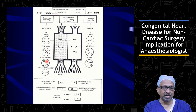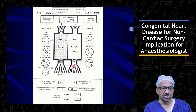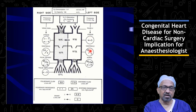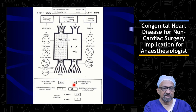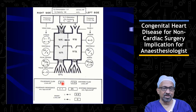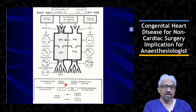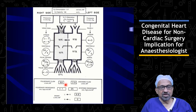Left atrial saturation is 97%, left ventricular saturation 97%, and aortic saturation 97%. Pressures in the left atrium, left ventricle, and aorta are normal. If you look at the pulmonary blood flow to systemic blood flow ratio, the pulmonary blood flow is increased — about 9.8 liters per minute per meter square — and the systemic blood flow is normal at about 3 liters per minute per meter square. This means the pulmonary blood flow is increased to about 3 to 4 times the systemic blood flow.